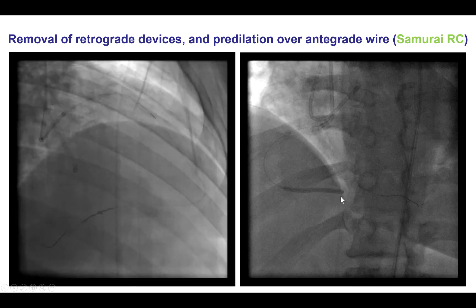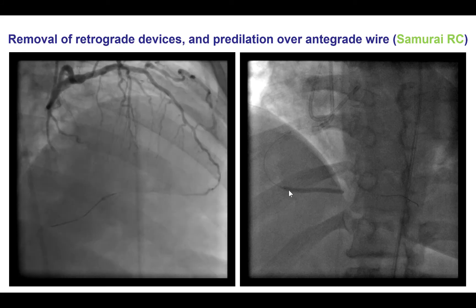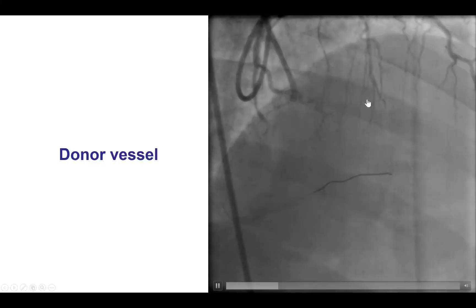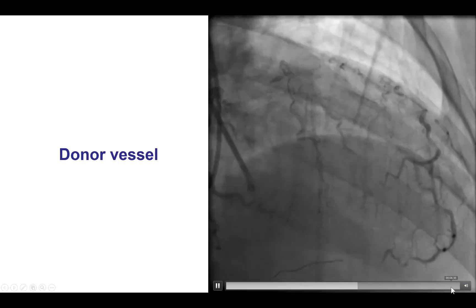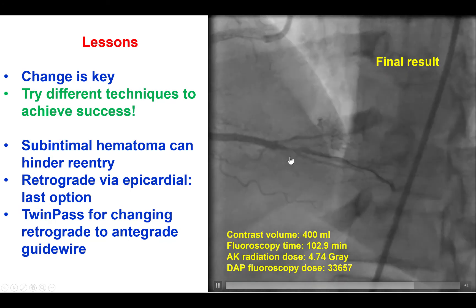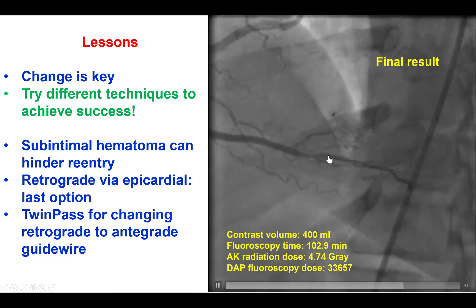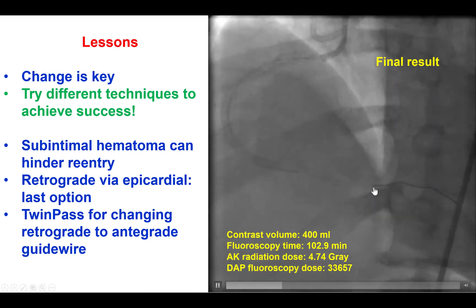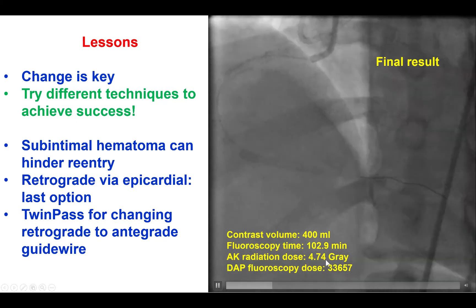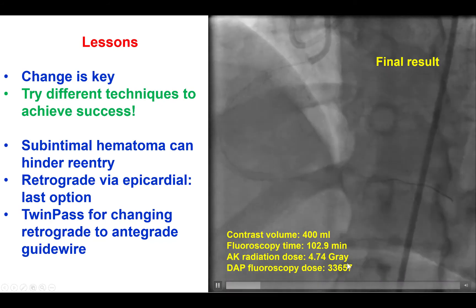We then placed several stents from the distal to the proximal right coronary artery, given the extensive dissection and hematoma in the distal right coronary. We confirmed no injury to the epicardial collateral and achieved a nice result with TIMI flow in the right coronary artery. There was some residual disease in the posterior descending artery, but with excellent flow, we decided not to place further stents. About 400 cc of contrast were used, with close to 5 gray radiation dose and long fluoroscopy time, reflecting the complexity of the case — though we stayed under 5 gray overall.